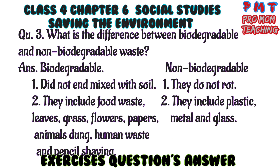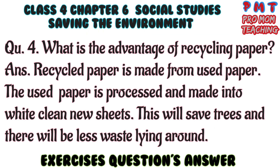Question three: What is the difference between biodegradable and non-biodegradable waste? Answer: First, biodegradable things rot and mix with soil, while non-biodegradable things do not rot. Second, biodegradable things include food waste, leaves, grass, flowers, peppers, animal dung, human waste, and pencil shavings, while non-biodegradable things include plastic, metal, and glass.